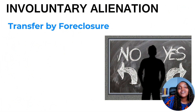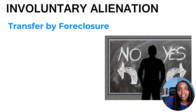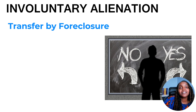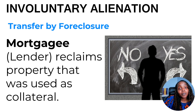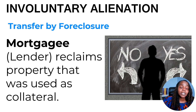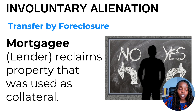The fourth type is transfer through foreclosure. Some would say this is under your control because how it works is you did not make your payment, and per the contract between you and the lender, you need to pay them back. You used the house as collateral to borrow money from the bank. So the mortgagee — the lender — is reclaiming the property because you used it as collateral. That is foreclosure, and that is under involuntary alienation.